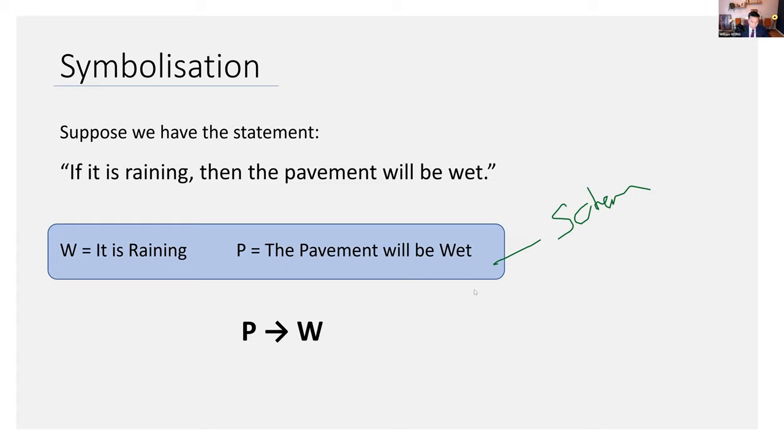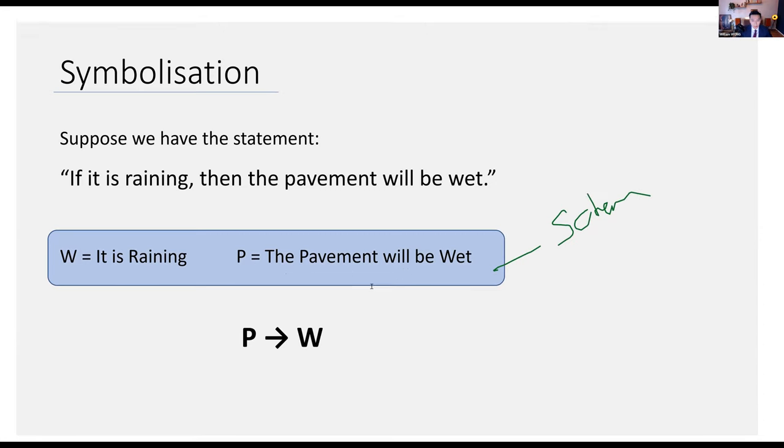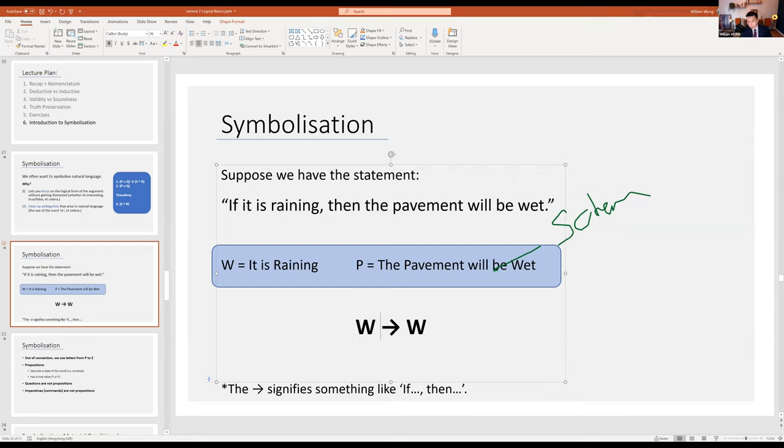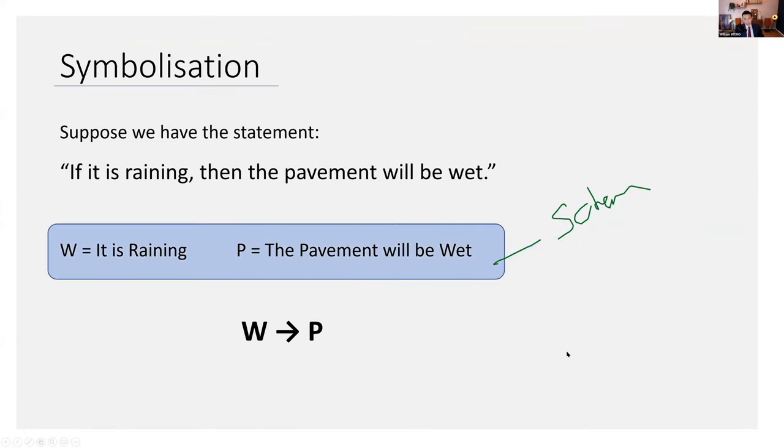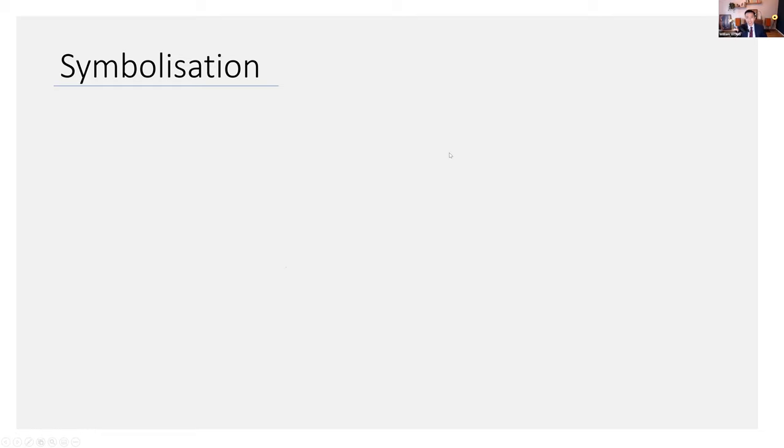We symbolize it like this. If it is raining, then the pavement will be wet. This is symbolized as W arrow P. The arrow here is what's called the material conditional, and it signifies something like if, then. So if W, then P. This is not cognitively difficult. Six-year-olds can get this. But don't worry, we'll encounter really complex symbolizations in due time.